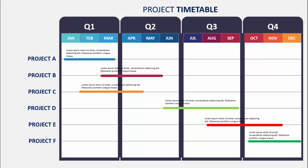In today's tutorial I'm going to show you how to create this project timeline or timetable. I have four boxes for each quarter — Quarter 1 starting from January to March, then Quarter 2, April to June, through Quarter 4, October to December. On the left side you can add the project or task details, and for each project you can add a colored line showing the timeline depending on the month, with some detailed text on top.